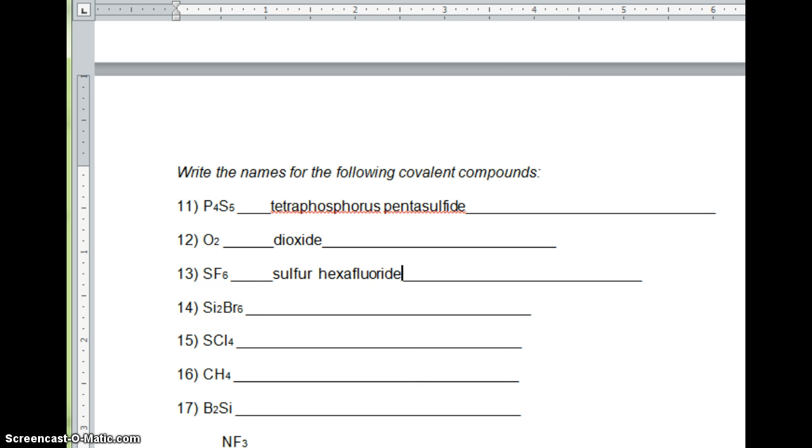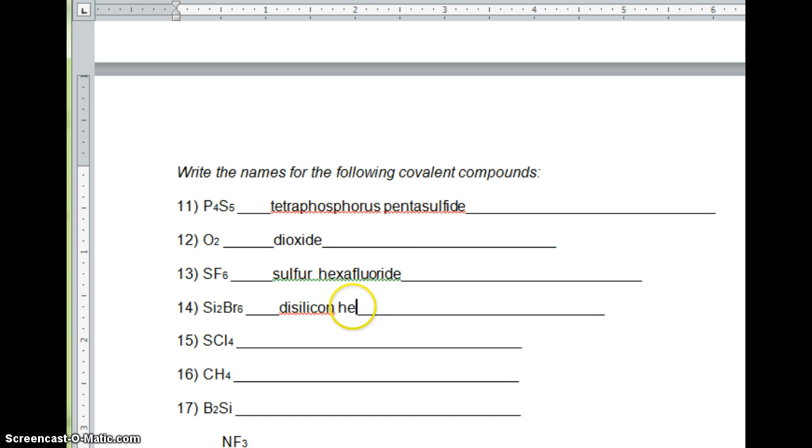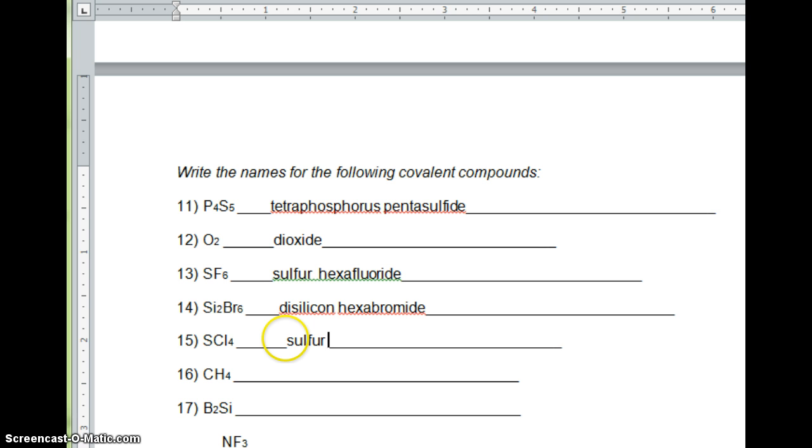The next one. We have how many silicons? Two. So it would be di. Disilicon. And then what would the ending be? There are six, so hexa. Hexabromide. Change the ending to -ide. The next one. There's one sulfur. One is mono. But do we write mono on the first one? Nope. So it's just going to be sulfur. And then what's our ending going to be? There's four atoms of chlorine. This is Cl. This is chlorine. So it would be tetra. Sulfur tetrachloride. Make sure you have that -ide ending.